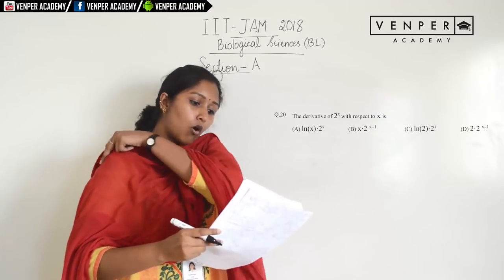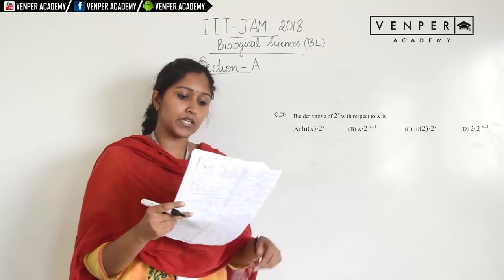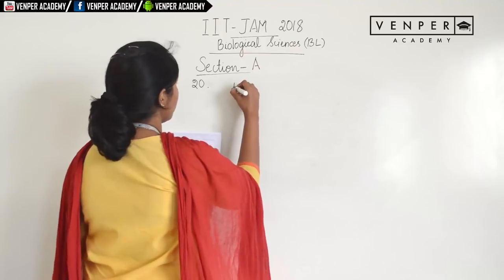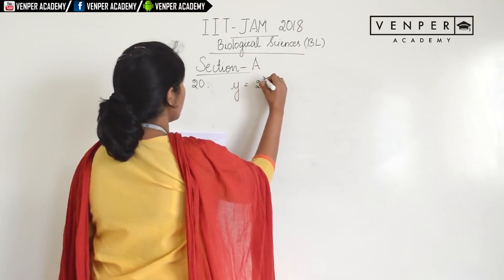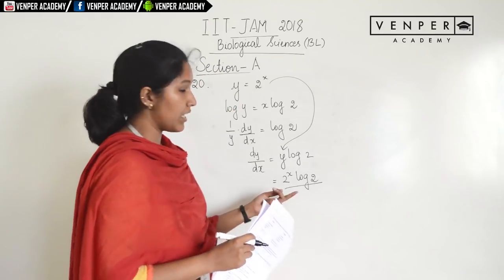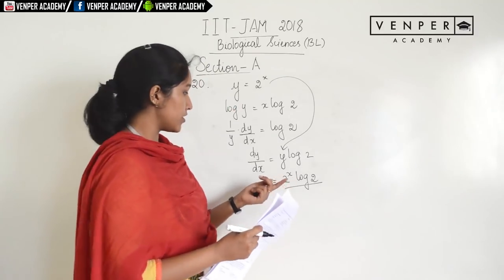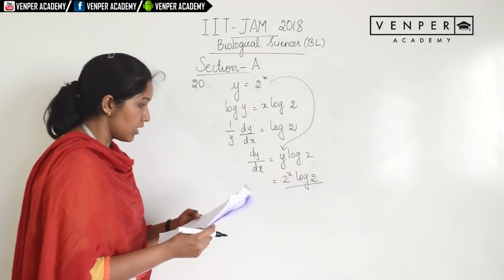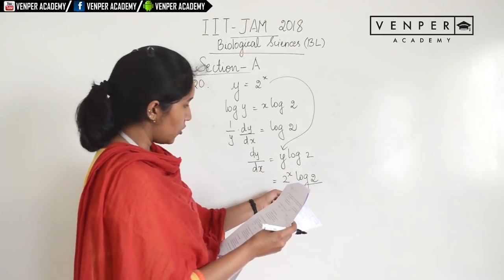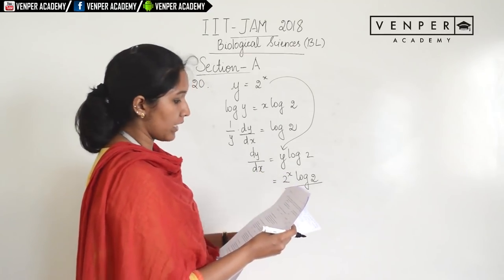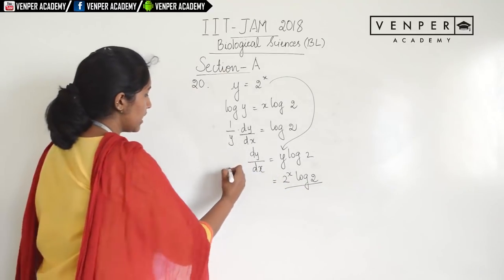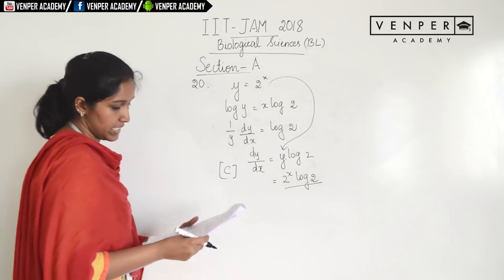Question 20: the derivative of 2^x with respect to x. Given y = 2^x, the derivative is ln(2) · 2^x. The answer is option C: ln(2) · 2^x.